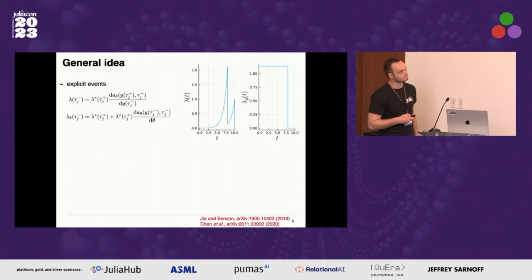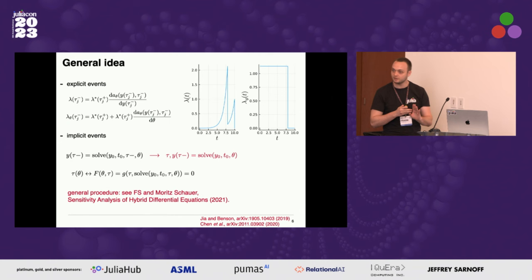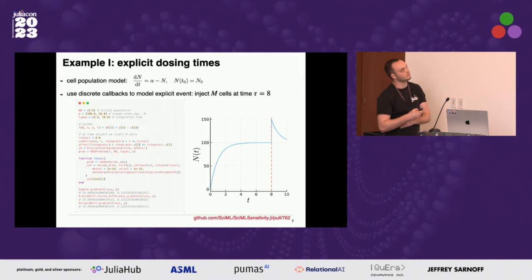For implicit events, it's a similar story. You store the event location, states and parameters. But in addition to this update rule, you get another update rule that depends on the condition function. That's because for implicit events, when you change the parameters, the time at which the event is triggered will also change. So you get two contributions to the equations that you need to update.